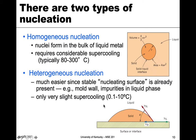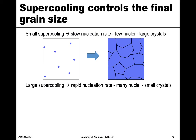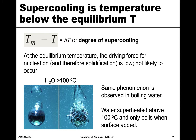Heterogeneous nucleation only requires slight supercooling — as low as 0.1 degree up to 10 degrees — much closer to equilibrium temperatures, which is why it's more common. This connects back to the superheating water example: the water above 100°C didn't boil until a ball was placed in it, because the ball acted as a surface on which nucleation could occur. That's why we see heterogeneous nucleation occur in that instance.